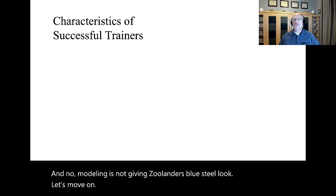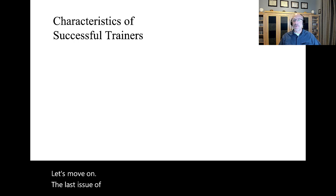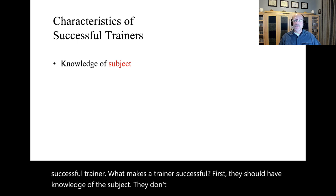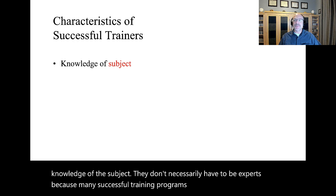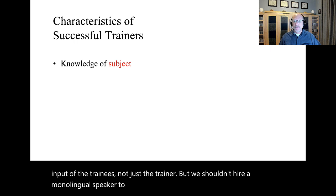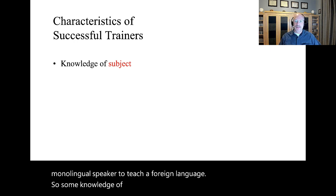The last issue of concern in training design regards the characteristics of a successful trainer. What makes a trainer successful? First, they should have knowledge of the subject. They don't necessarily have to be experts because many successful training programs rely on the experiences and input of the trainees, not just the trainer. But we shouldn't hire a monolingual speaker to teach a foreign language. So, some knowledge of the subject is definitely essential.